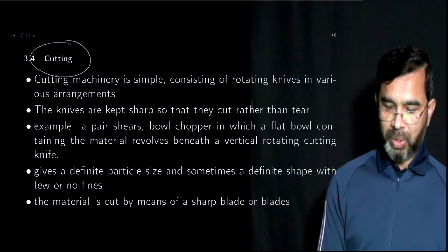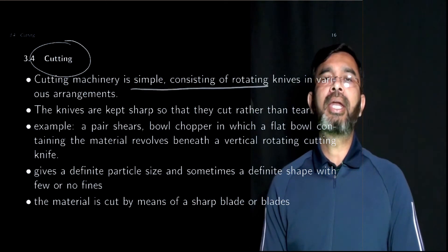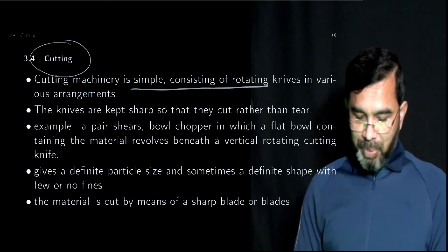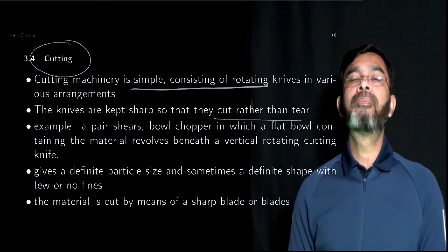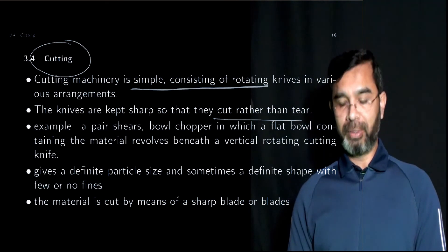The fourth mechanism is cutting. This is different from other applications - typically cutting is done with a sharp surface. It's simple, consisting typically in an industrial setting of a rotating knife in various arrangements. The knife should be sharp so that it cuts rather than tears the material.